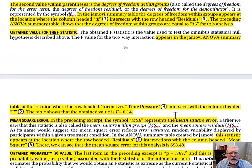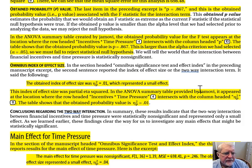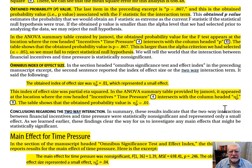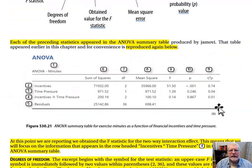What about effect size? On page 57, we have the section 'Omnibus Index of Effect Size.' The obtained index of effect size was partial eta squared = 0.01, which represents a small effect. In the ANOVA summary table provided by Jamovi, this appeared at the location where the row headed 'Incentives by Time Pressure' intersects with the column headed partial eta squared. The table shows the obtained value was 0.01.